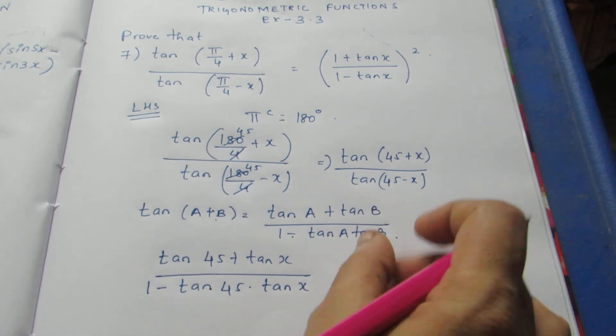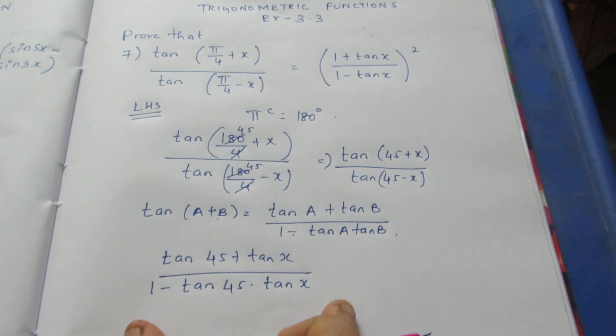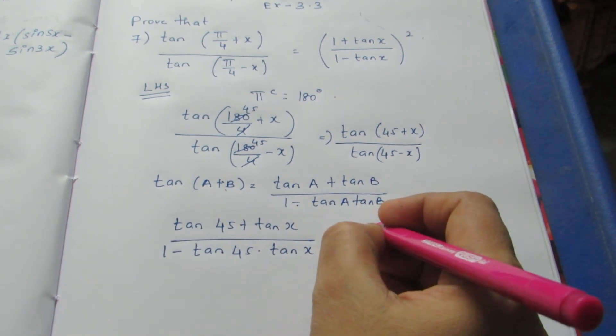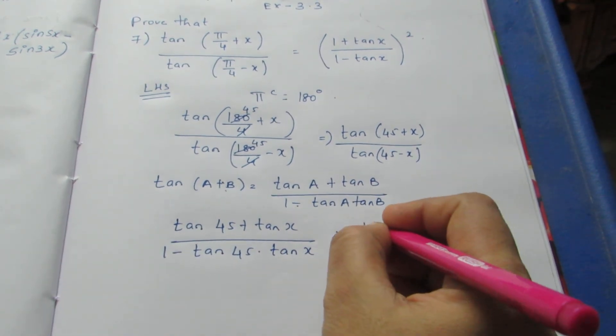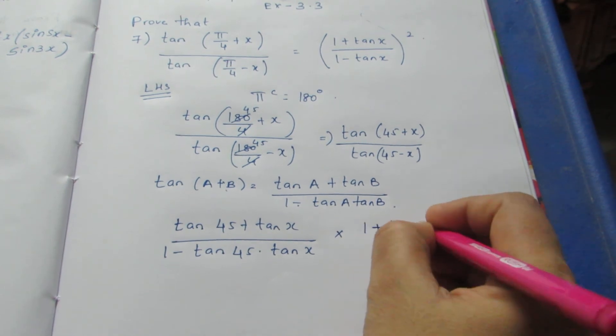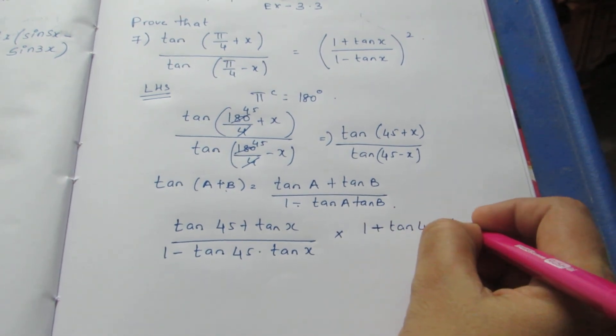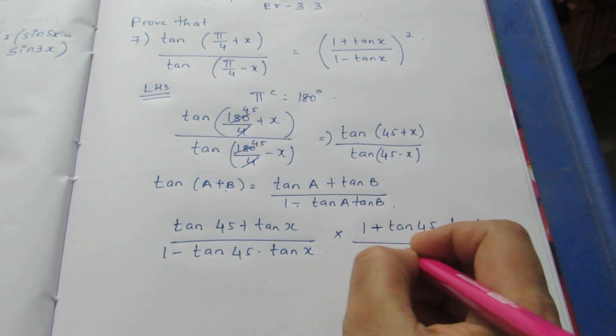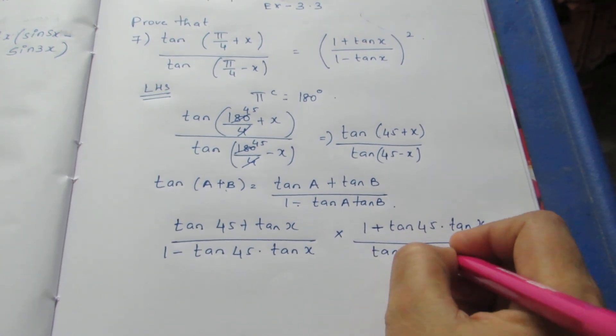This by, I can write as a reciprocal. This term will come in the denominator. I can write this in reciprocal form. So here it becomes (1 + tan 45 · tan x) by (tan 45 - tan x).